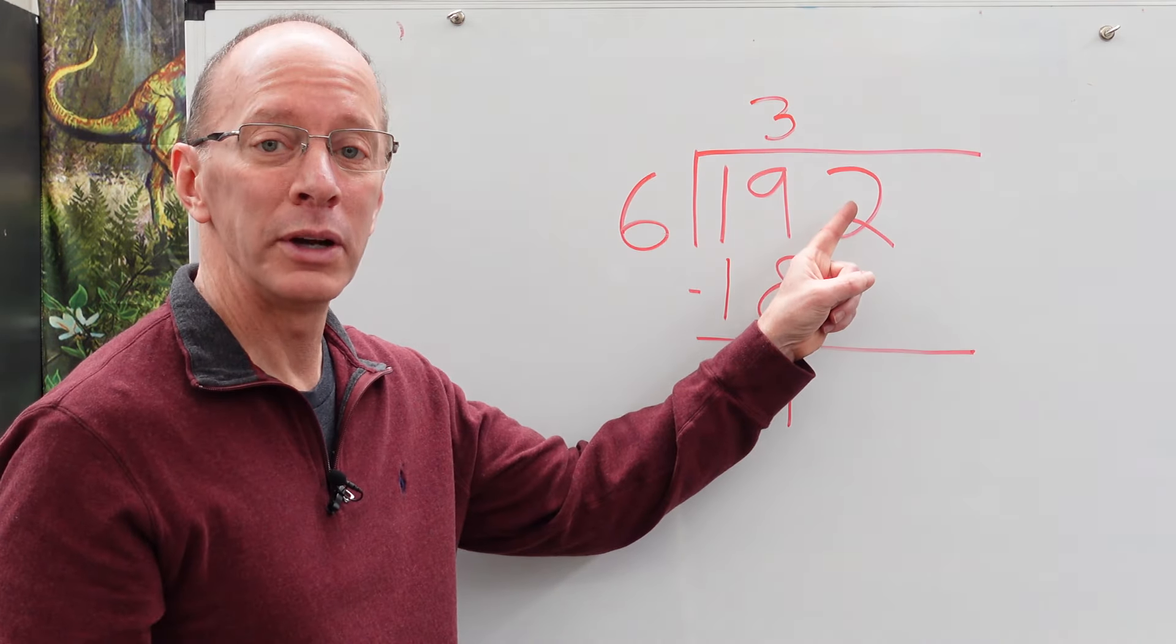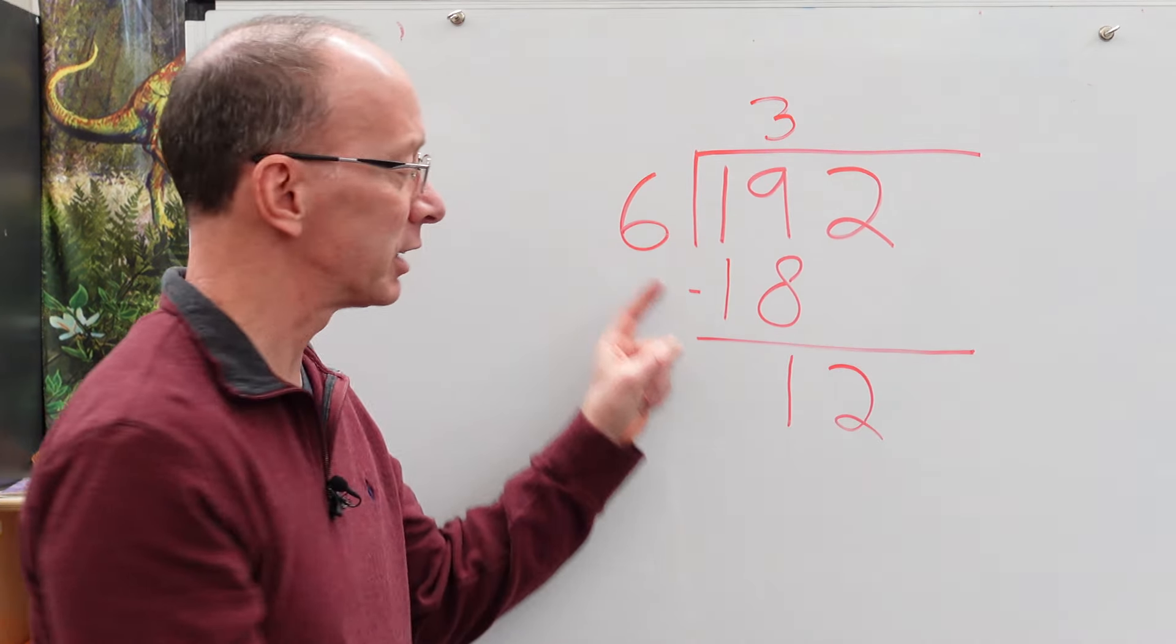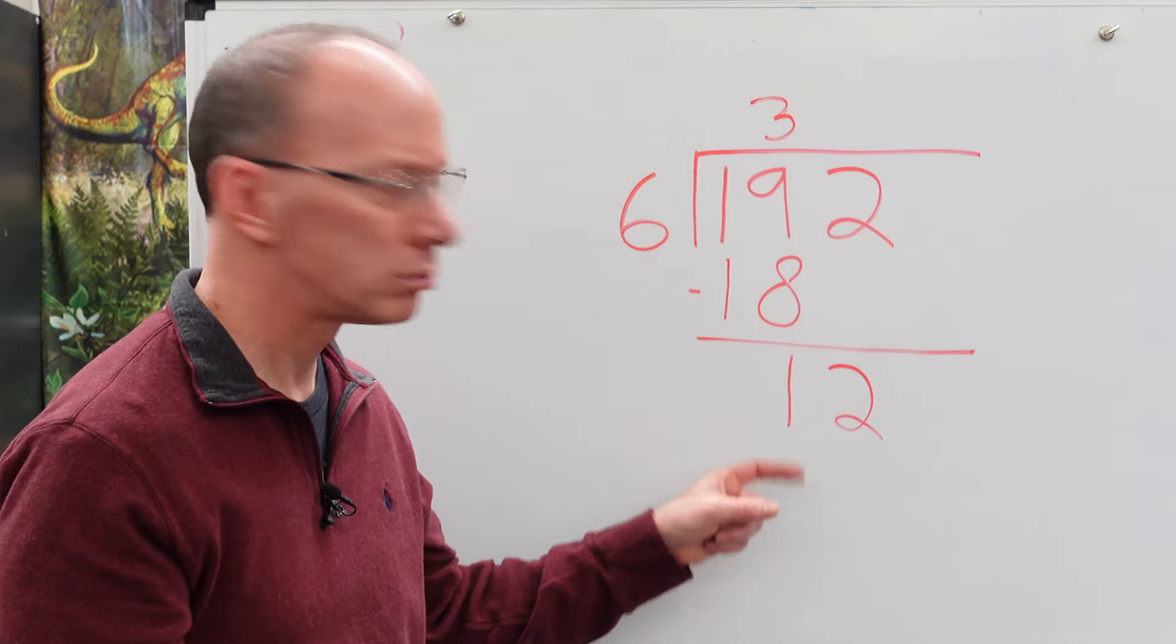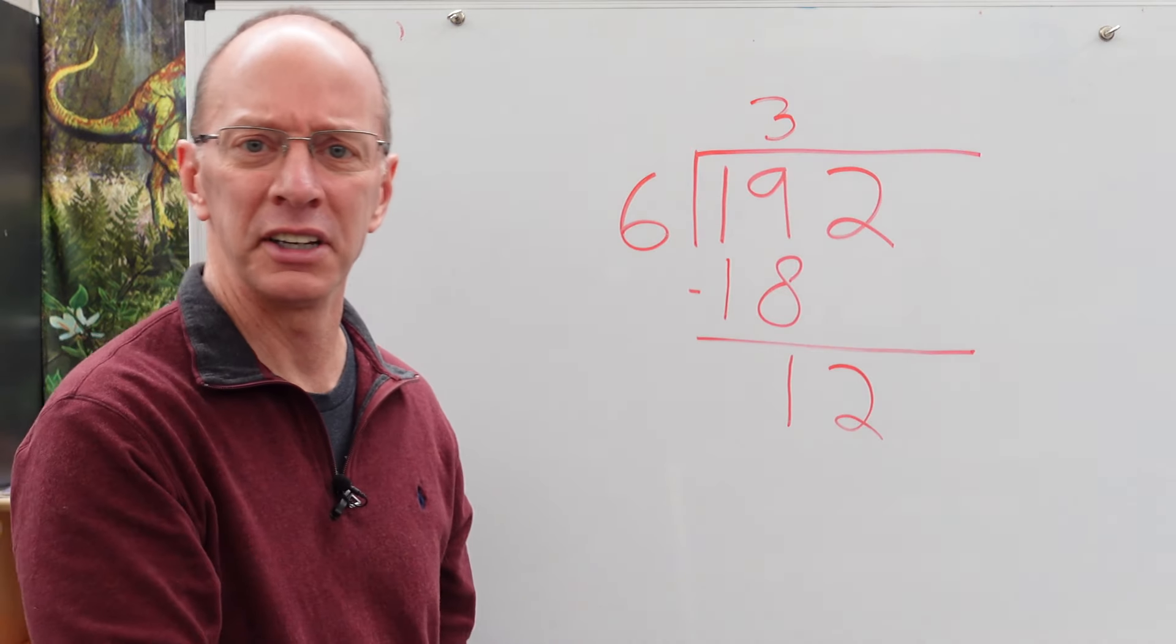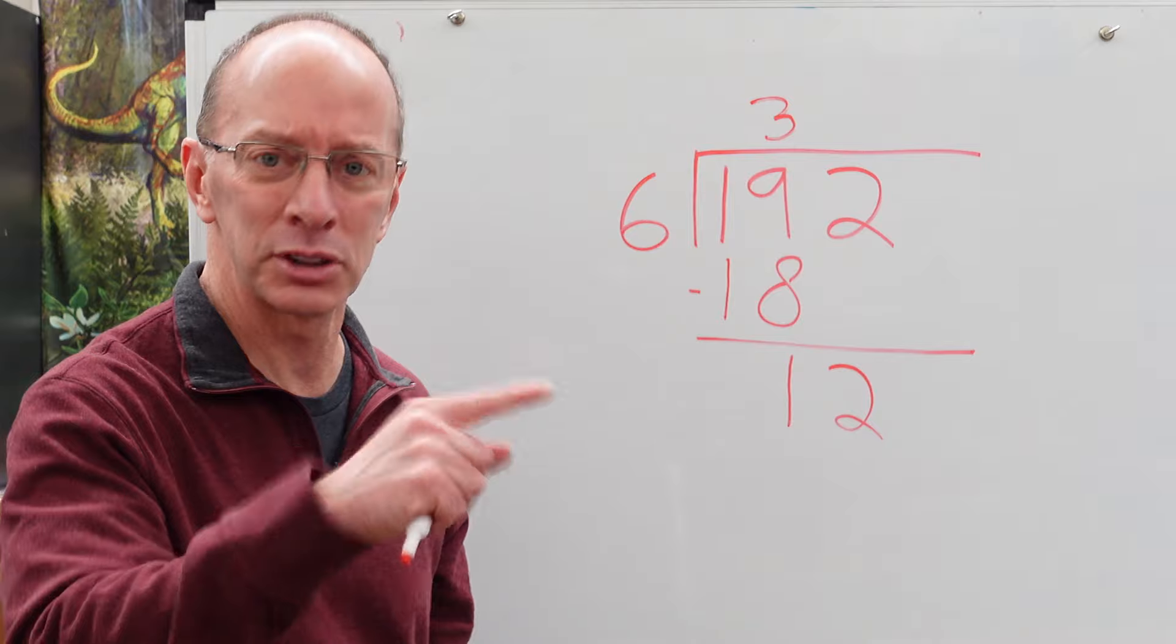All right. Now we bring this number, drop it down. Right here. How many times can I put six into the 12? Well, that's pretty easy. You only have to put that six into 12 two times. Six times two is 12.